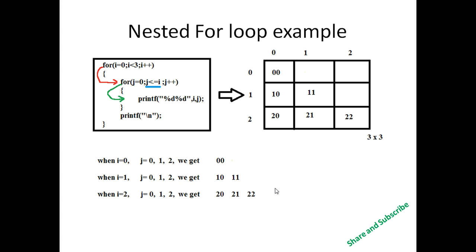Using the nested loop we can also print a diagonal matrix — that is: 0 0, 1 1, 2 2. We do this by using the simple condition j less than or equal to i.